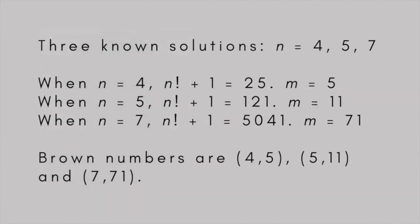There are only three known solutions to the problem. These are n equals 4, 5, and 7. When n equals 4, n factorial plus 1 is 25. That's 1 times 2 times 3 times 4 plus 1, which is 5 squared, so that m equals 5.